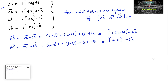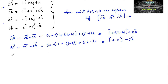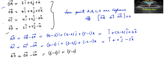And vector AD = OD - OA, which is equal to (6-3)i + (5-2)j + (-1-1)k, which gives AD = 3i + 3j - 2k.